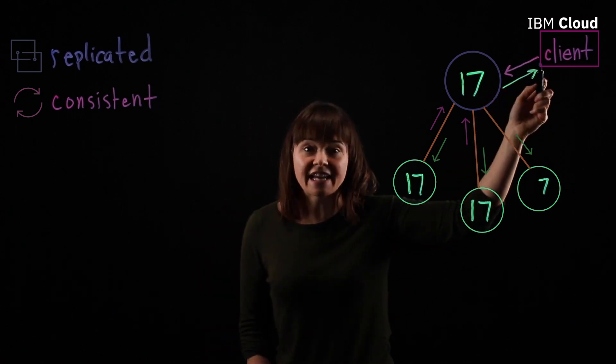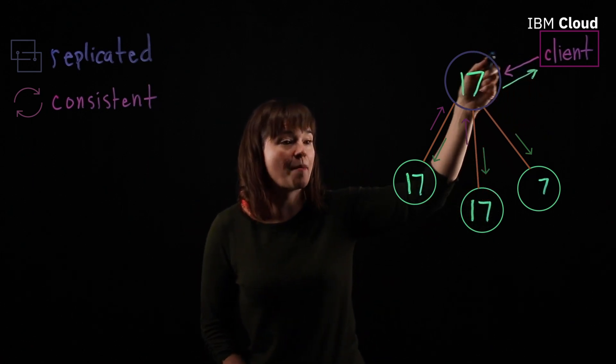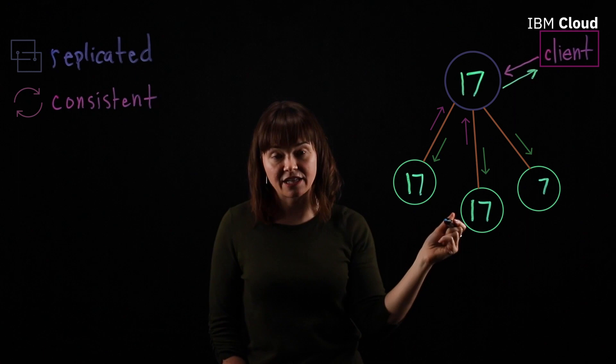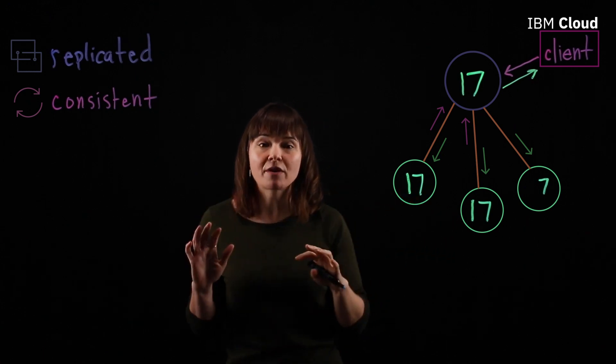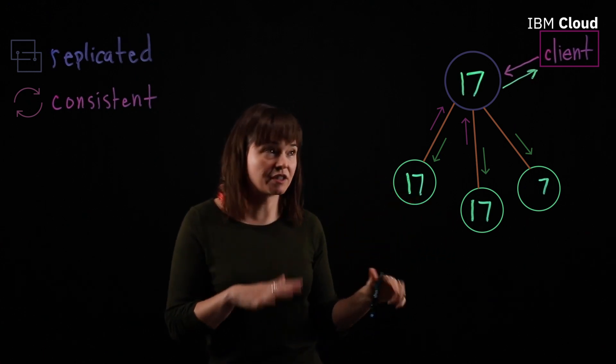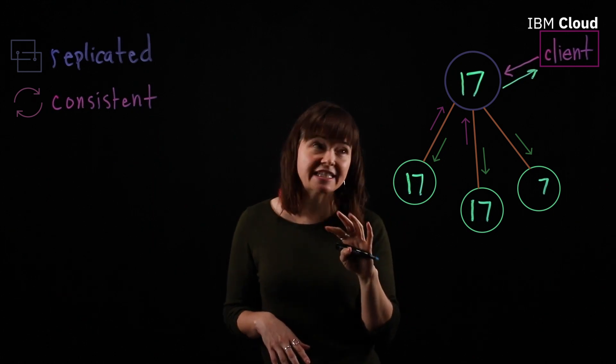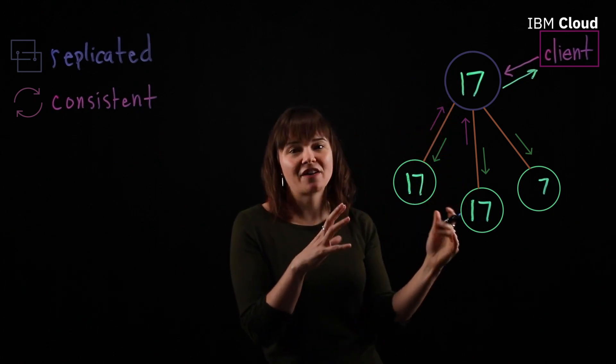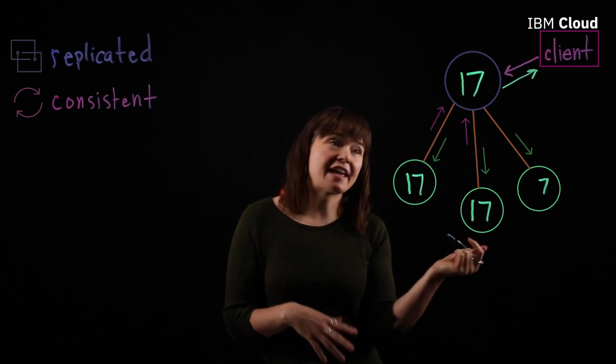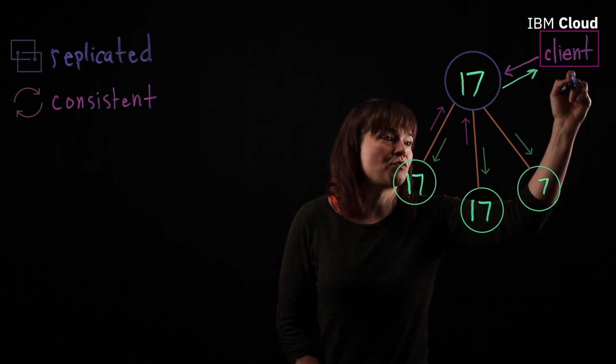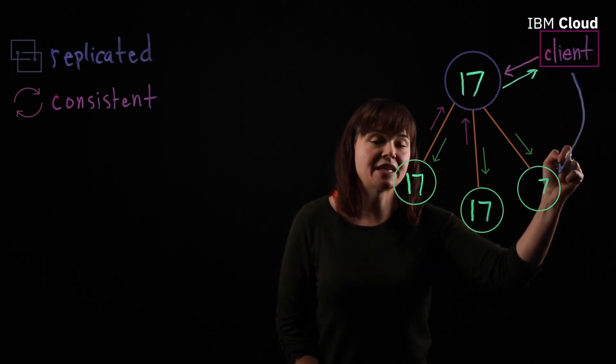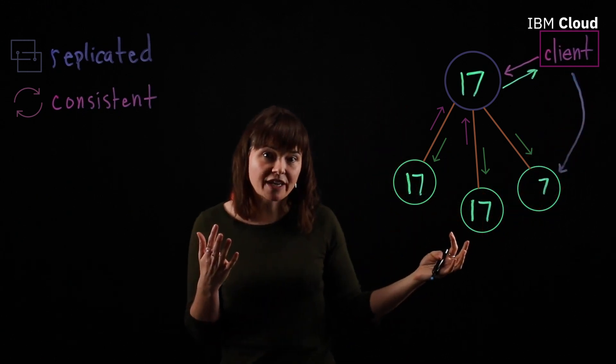Now a client doesn't actually have to concern itself about which node in the cluster is the leader. The client can make read and write requests to any node in the cluster. So let's say this all happens over a matter of milliseconds. But let's say that the client makes a read request to the node that hasn't updated yet and says, what's the value at key one?